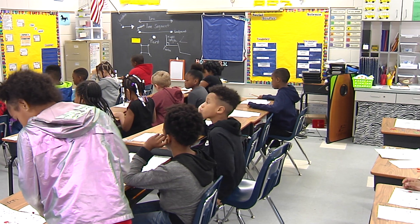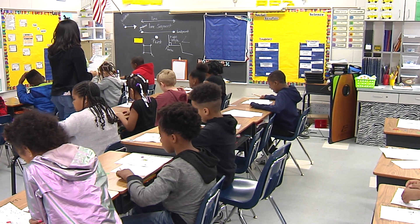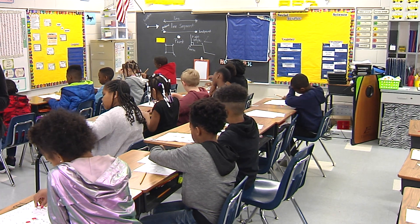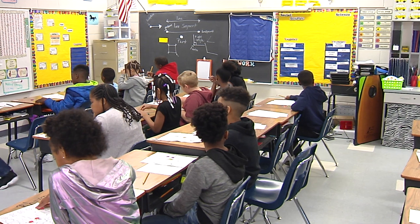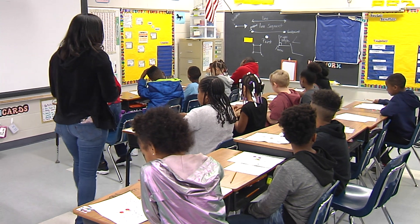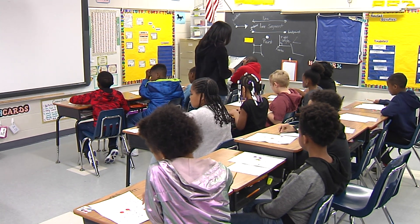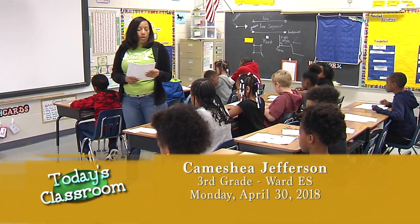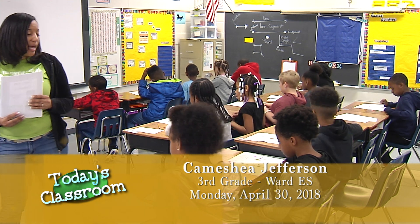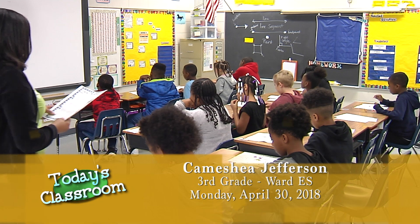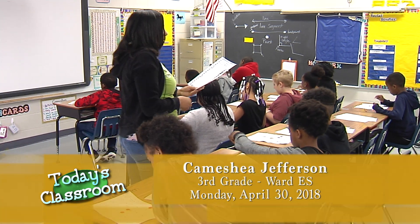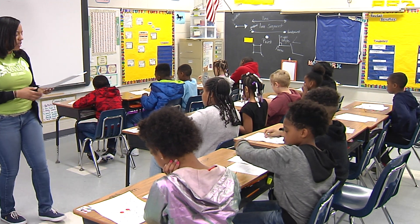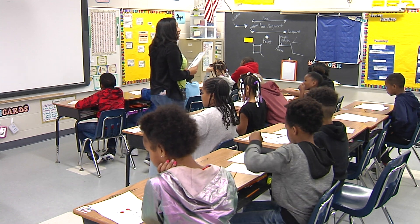The next clue says: a collection of points going on and on in both directions and has no endpoint. Find that on your bingo board. Then: these are lines that are always the same distance apart and never touching — find that one too.